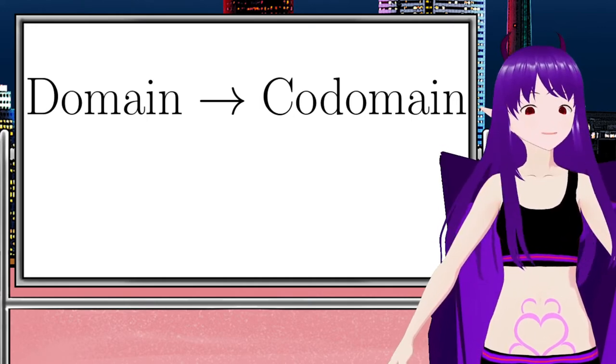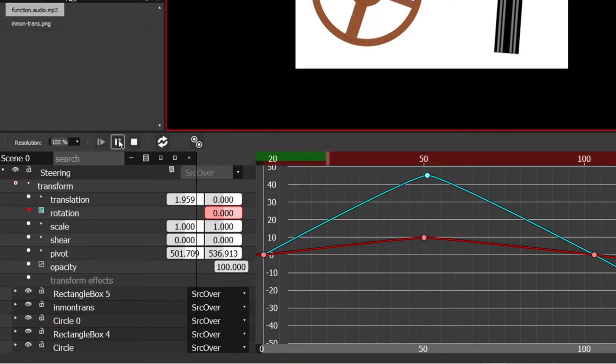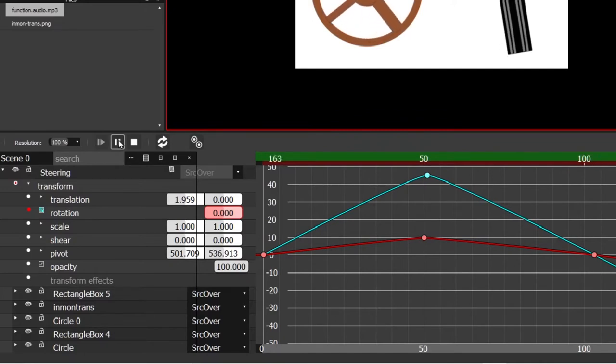Here is an example. This is a graph representing the function that takes a whole number of frames that have passed and returns a floating number representing the rotation of an object.